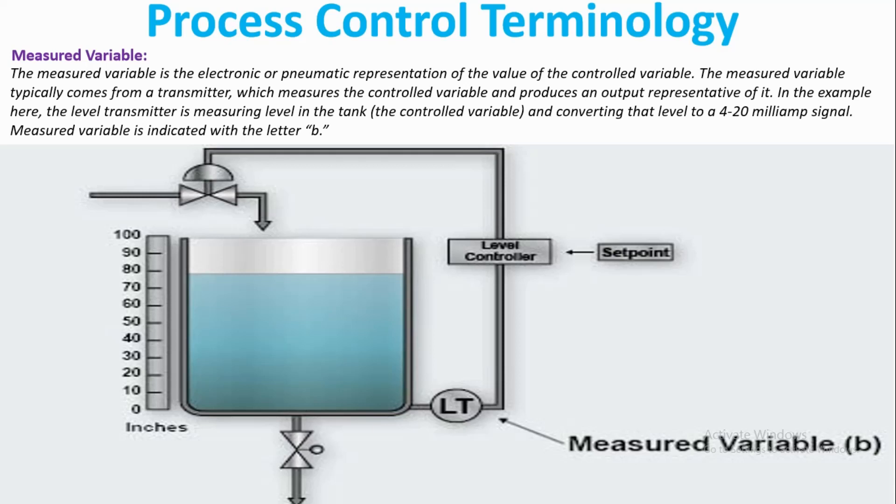In the example here, the level transmitter is measuring level in the tank, the controlled variable, and converting that level to a 4 to 20 milliamp signal. Measured variable is indicated with the letter B.